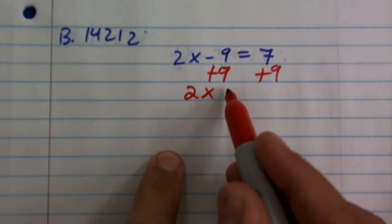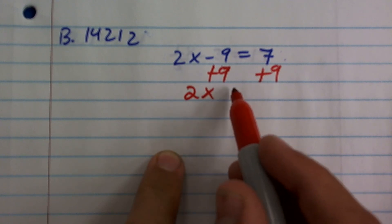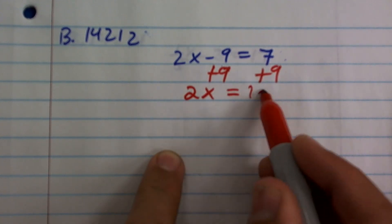So now I have 2x. Negative 9 plus 9 is 0, so 2x plus 0 is 2x equals 7 plus 9, which is positive 16.